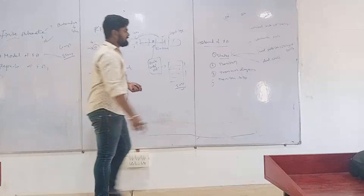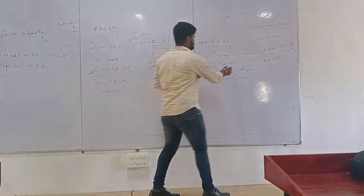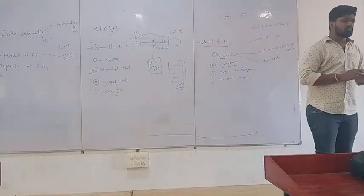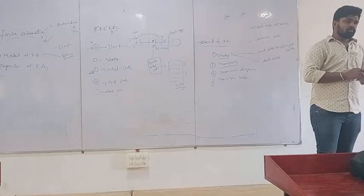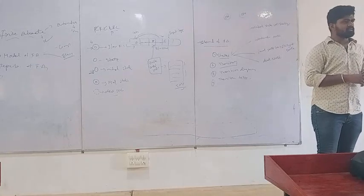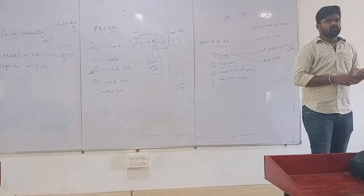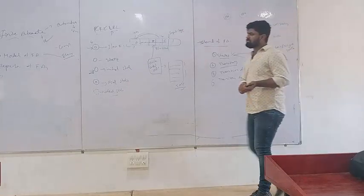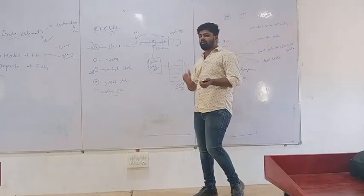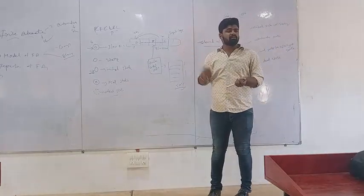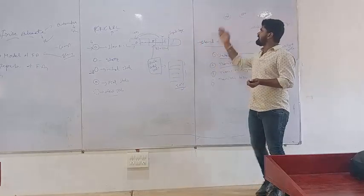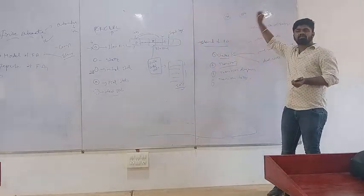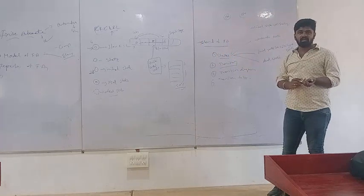Next we have transition. What is meant by transition? Transition means when you are changing state from one state to another state. For example, if you are moving from the on state to the off state, that process is called transition. Note that transition and transaction are different things.